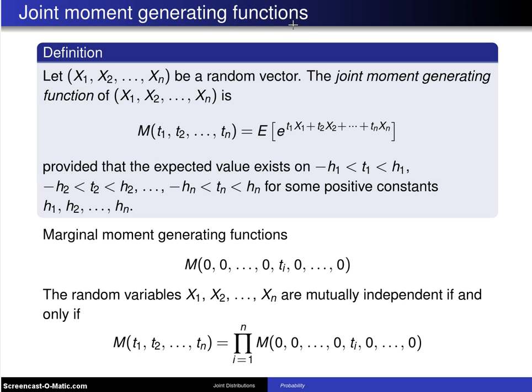So multivariate random variables have joint moment generating functions and here is their definition. Let X₁ up to Xₙ be a random vector. The joint moment generating function of X₁ up to Xₙ is M of t₁ up to tₙ equals the expected value of e to the t₁X₁ plus t₂X₂ all the way up to tₙXₙ, provided